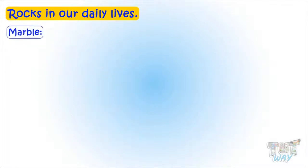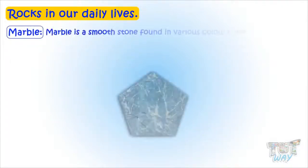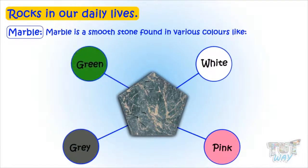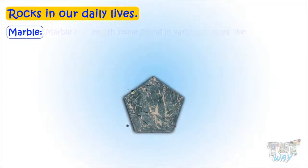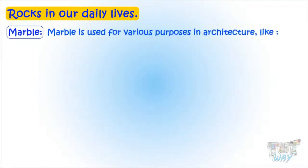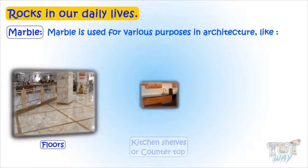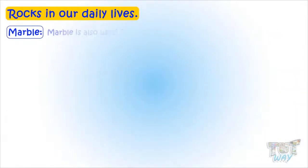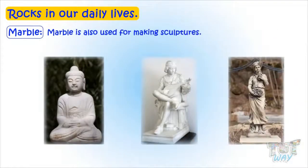Marble is a smooth stone found in various colors like white, pink, gray, green, and even brown. Marble is used for various purposes in architecture, like for making floors, kitchen shelves, and pillars. Marble is also used for making sculptures.